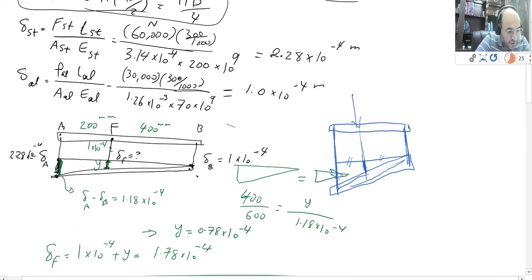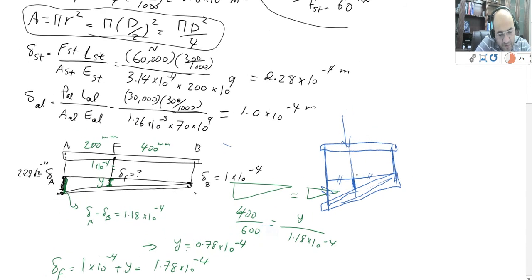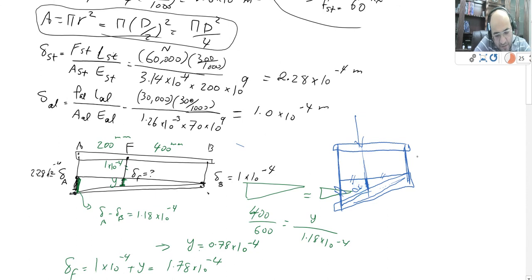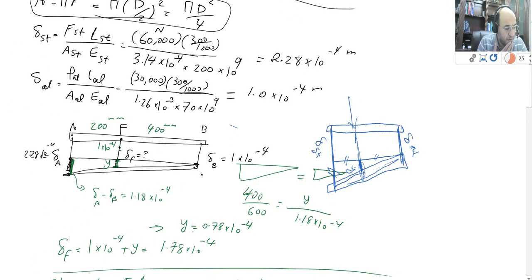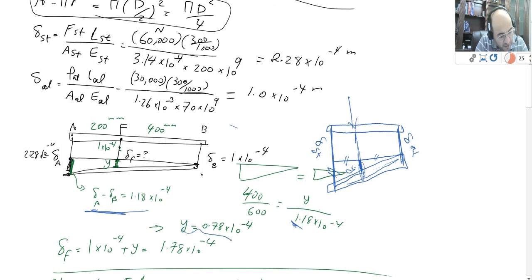I'm going to subtract delta of aluminum from delta of steel — that will give this distance Y. Delta of F would be delta of aluminum plus this Y. For the similarity between triangles: here is 200, the whole thing is 600. Delta A minus delta B came to be this much, so 400 over 600 times Y equals that, then you cross multiply to find Y. Once you find Y, add Y with delta of aluminum, and this gives delta of point F.